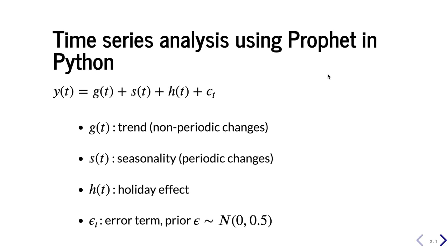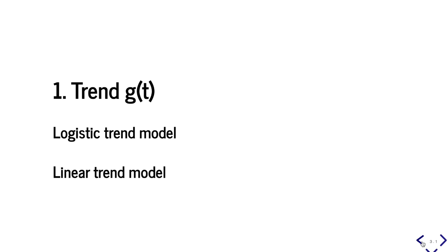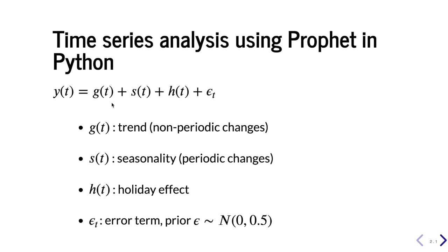Prophet models time series as a generalized additive model combining the trend function, the seasonality function, the holiday effects, and the error term in the model. I'm going to talk about each of those in detail in the next few sections.